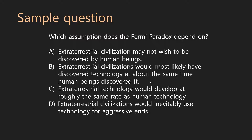Let's check B. Does B need to be true in order for the paradox to be true? B says: extraterrestrial civilizations would most likely have discovered technology at about the same time human beings discovered it. That is opposite to what the passage said. The passage actually said the paradox considers it highly unlikely that they would have discovered technology at the same time as us. So that's what we call an opposite answer. These answer choices can be dangerous because they often have so many similar words that your eye thinks it looks right. But if you read it carefully, you can see it's saying the exact opposite. Read the lines carefully.